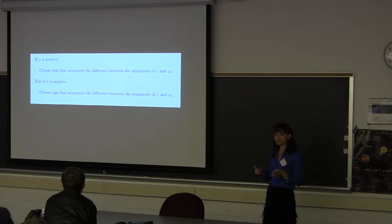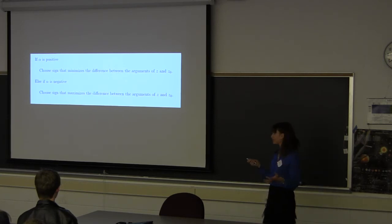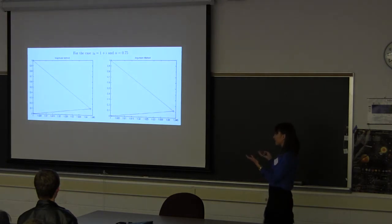We found that there are really two popular ways to choose the sign. The second way had to deal with the argument as opposed to the magnitude of the denominator. So, the second way, unfortunately, it also needed these two cases. This one called for choosing the sign that minimizes the difference between the arguments of Z and Z-not for positive alpha and then maximizing the difference between the arguments of Z and Z-not for negative alpha. So, that really wasn't beneficial in any way. Sometimes they created the same images.